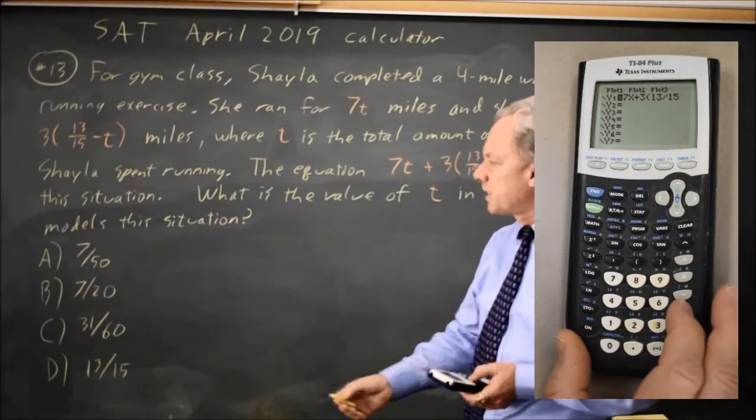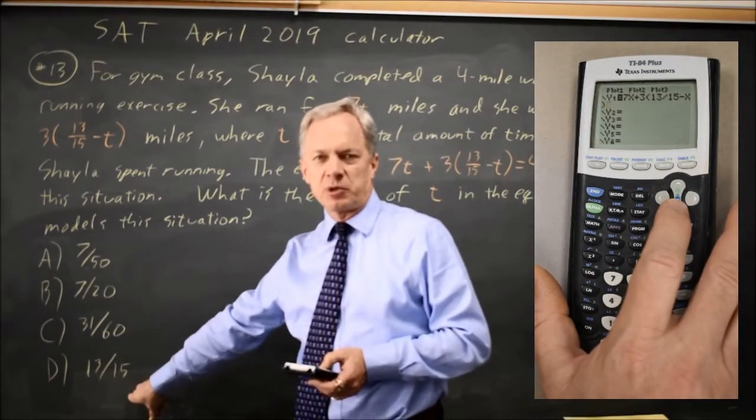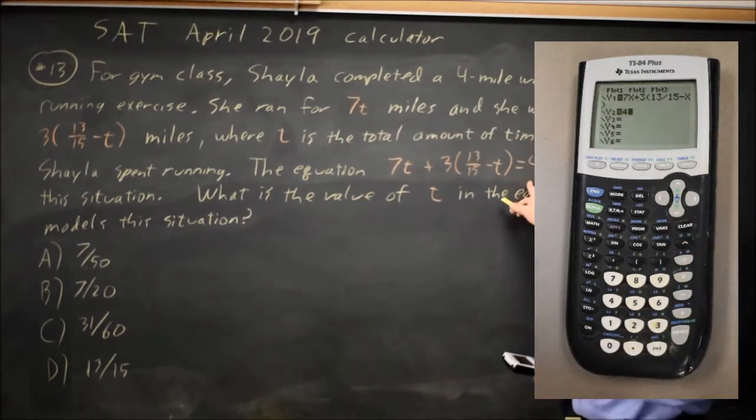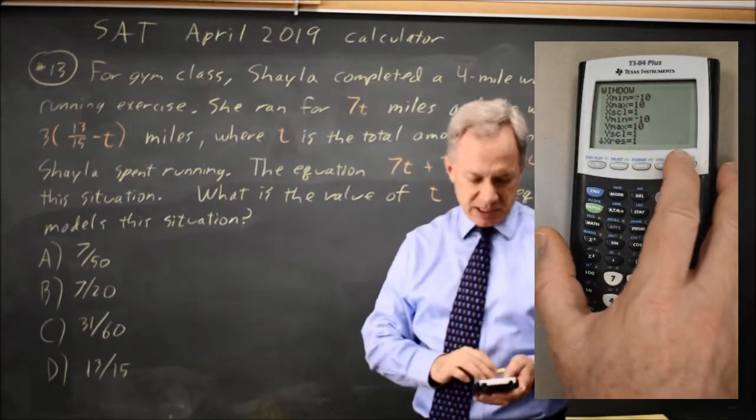I'm going to use the standard window because all of my answer choices for t, which I'm going to put in as x, are between negative 10 and 10, and my constant on the right is 4, which is also between negative 10 and 10. Everything's in my standard window.